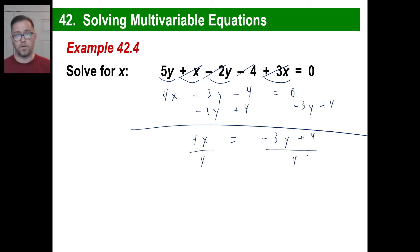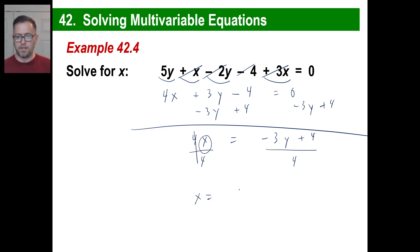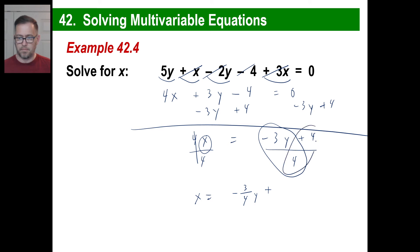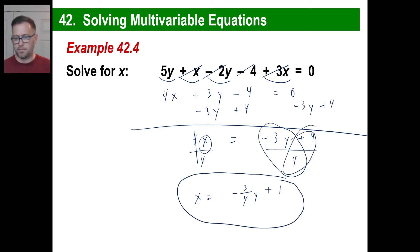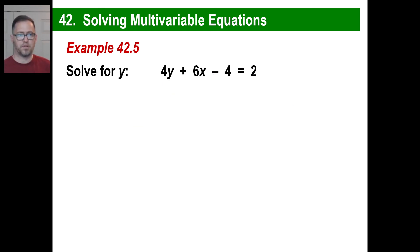You can write the answer this way if you want to. Or the back of your book might individually do these fractions — that'll be negative 3 fourths times y for this one, and then 4 divided by 4 is 1. So x equals negative 3 fourths y plus 1. That would be your answer. Pause and copy — why don't you try this one yourself? Pause it, try the entire thing, get an answer, write it as one fraction, then write it as individual fractions, and then let's come back together.